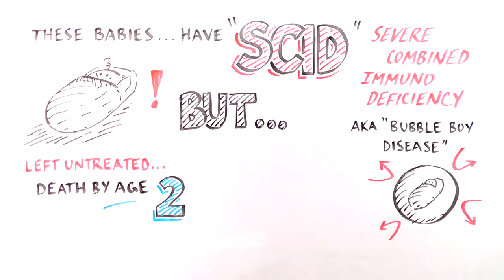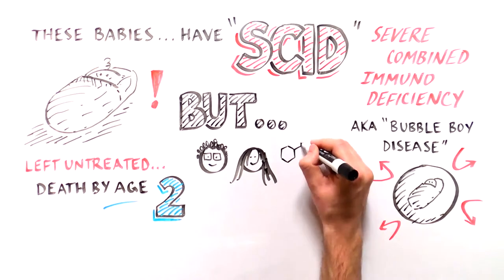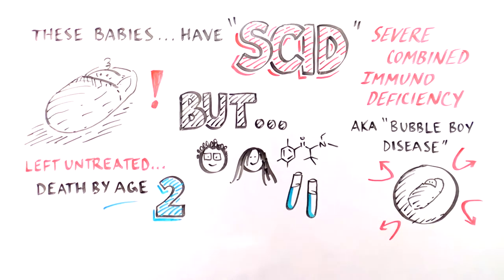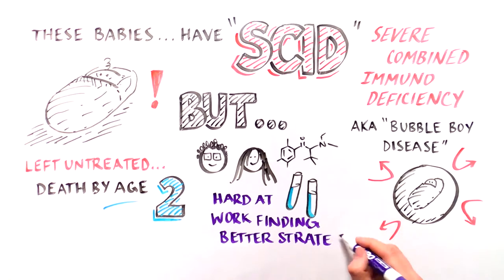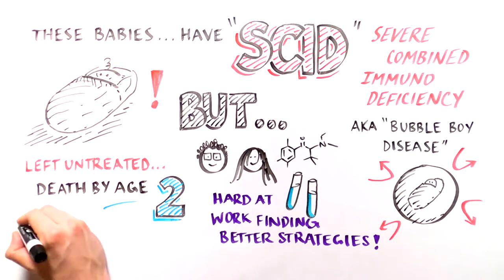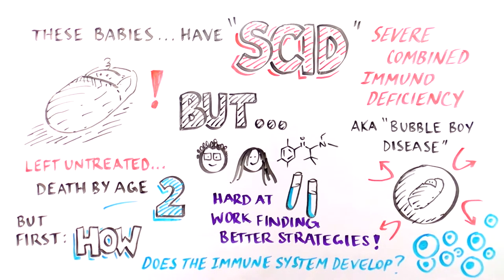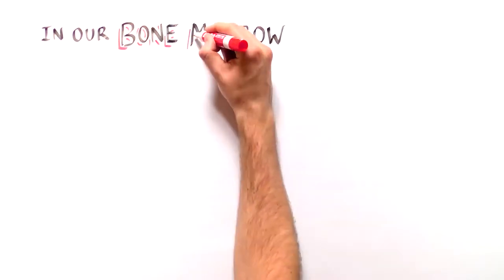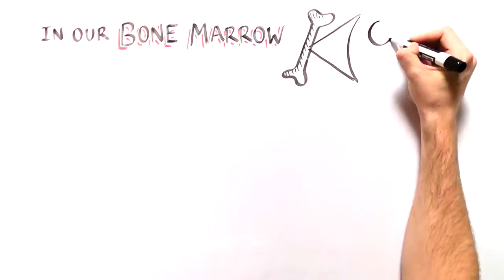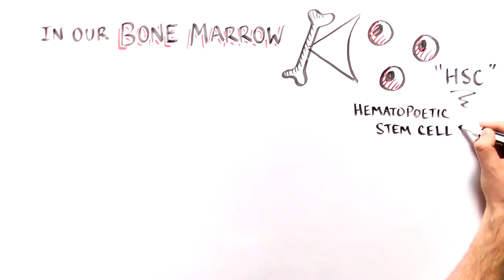Fortunately, researchers have worked hard trying to fix the immune systems of SCID babies, and continue to develop better stem cell transplant strategies to cure SCID. Before we explain the therapies, let's discuss how the immune system develops. A special type of cell lives in our bone marrow called a hematopoietic stem cell, or HSC.